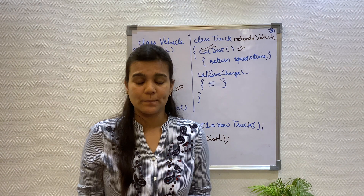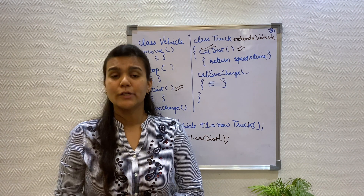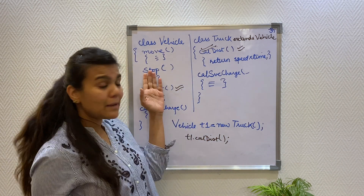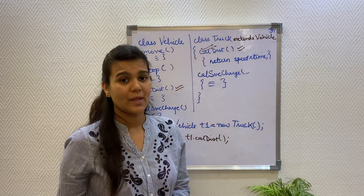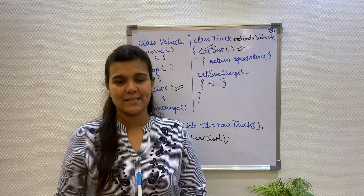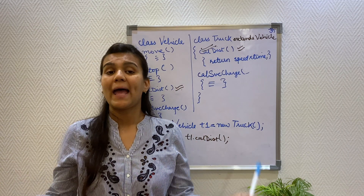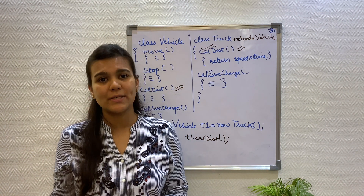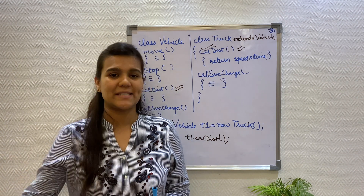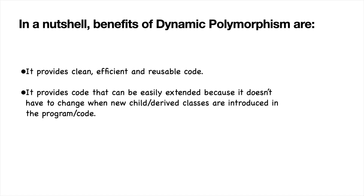In static polymorphism, the method name was the same but there was a difference in the signatures, which helped the compiler to bind the call to the code at compile time. In dynamic polymorphism, the methods have the same name and the same signature. So how does the resolution happen? It happens at runtime when the object is instantiated — the object instantiation decides which method will be called. Since the object instantiation is happening at runtime, dynamic polymorphism is also known as runtime polymorphism. You can conclude that dynamic polymorphism provides highly efficient and clean code, and any programmer can extend the code without prior knowledge of the existing code.